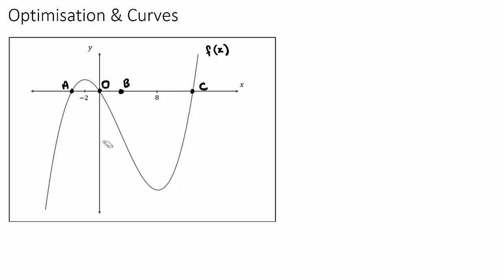What I want us to understand is: what does f(A) equal? This means what is the y-value at point A. At point A, the y-value — because this is our f(x) function — will be 0, because on our y-axis it's not up here, it's not down here, it's actually when y equals 0. So f at this point will be equal to 0.